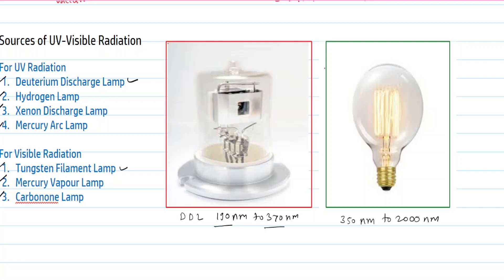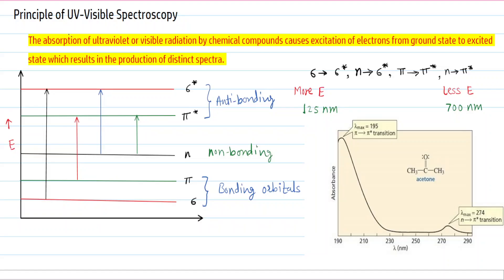Now we will see the principle of ultraviolet-visible spectroscopy. The principle depends upon the interaction of ultraviolet or visible radiation with a chemical compound. The absorption of ultraviolet or visible radiation by a chemical compound causes excitation of electrons from the ground state to the excited state. Ground state means electrons at a low energy level; excited state means electrons at a higher energy level. This results in the production of distinct spectra.